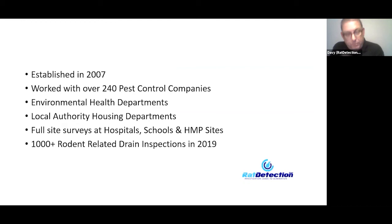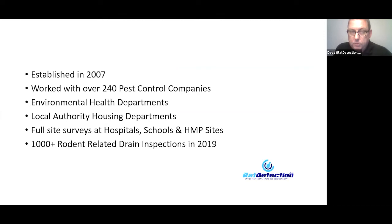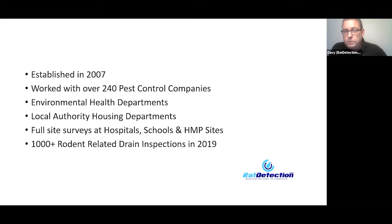So we founded Rat Detection, a drain surveying company that only operates in the pest control industry. We were established in 2007 and have worked with 240-plus pest control companies. We do work for environmental health departments, local authority housing departments, and specialise in domestics but also do full site surveys for schools, hospitals, and prison sites. In 2019, we did in excess of 1,000 rodent-related drain inspection surveys.